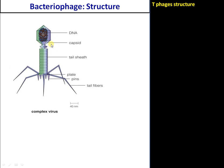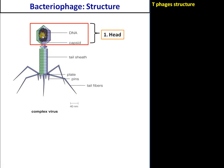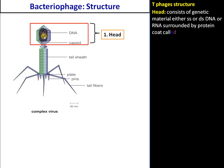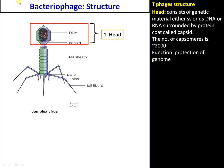The structure of a bacteriophage consists of a head region. The head portion contains the genetic material, which can be DNA or RNA, and can be single-stranded or double-stranded. Bacteriophages are classified based on the type and strand nature of their genetic material.